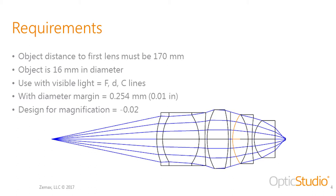This slide shows the requirements we will be using when optimizing the OpticStudio file. The screenshot shown here is the starting file and there is a lot of work that needs to be done. We are going to increase the first air spacing — the distance from the object plane to the first lens — and that needs to be 170 millimeters. We are also going to set up this system for an object that is 16 millimeters in diameter.